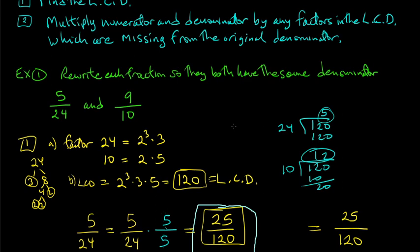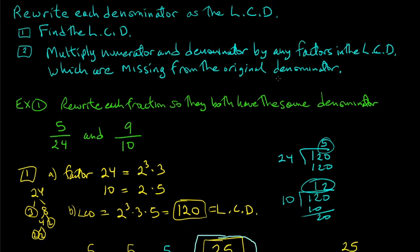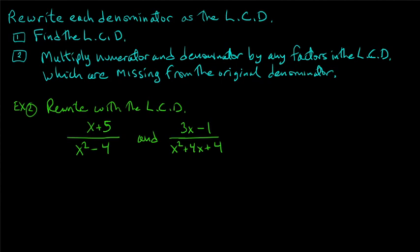Before we move on to adding and subtracting, let's get more practice just rewriting fractions so they share the same denominator — which will be the least common denominator. Here's the next example: rewrite with the LCD for (x+5) over (x squared − 4) and (3x−1) over (x squared + 4x + 4).